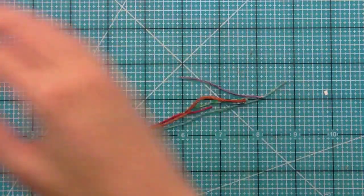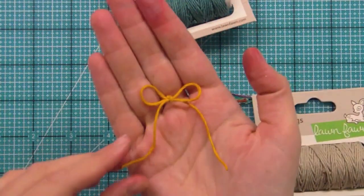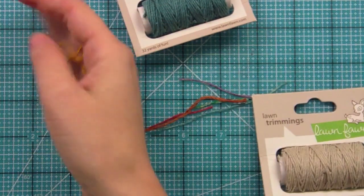Okay, so that is our lawn trimmings cord. You can see how we have the great triple color pack, which you can make some really fantastic bows. It really holds its shape. It's great for threading buttons.